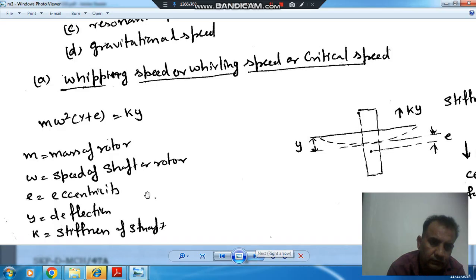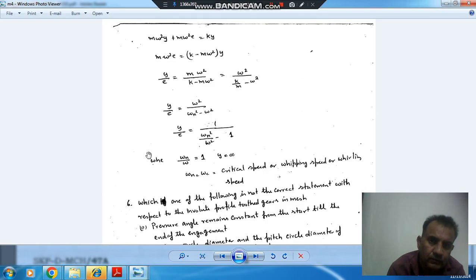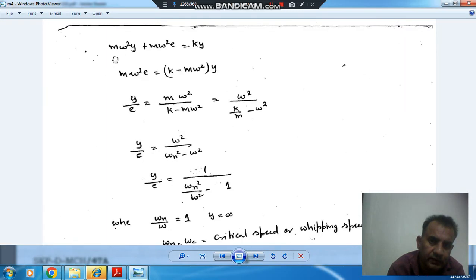So M omega square Y plus E is equal to kY. So now if we solve this equation, then it will be M omega square Y plus M omega square E is equal to kY. So Y by E is equal to M omega square divided by k minus M omega square, or equal to omega square divided by omega n square minus omega square. And k by M is omega n square.